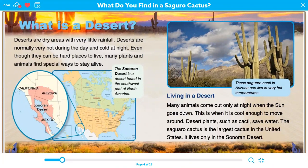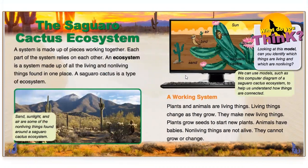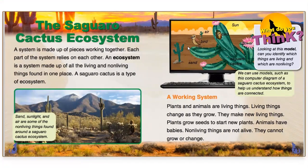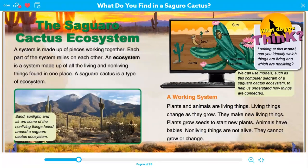Living in a desert. Many animals come out only at night when the sun goes down. This is when it is cool enough to move around. Desert plants such as cactus save water. The saguaro cactus is the largest cactus in the United States. It lives only in the Sonoran Desert. Look at those huge cactuses. An ecosystem, which is our theme for this week, is a system made up of all living and nonliving things found in one place. A saguaro cactus is a type of an ecosystem, so animals and living and nonliving things all live in this cactus. We can see a great detailed illustration — that ties in with one of our standards — giving us an understanding of all the different animals that live there.